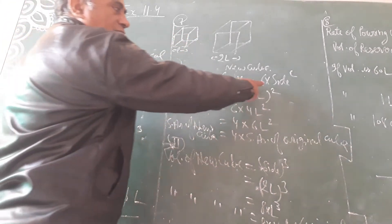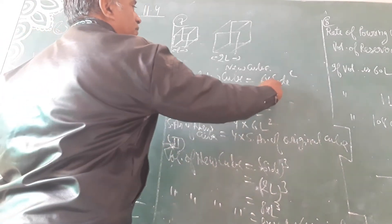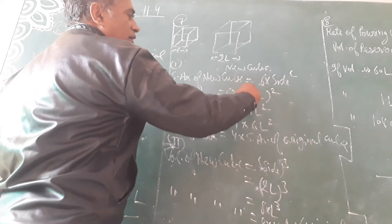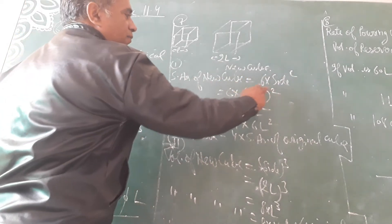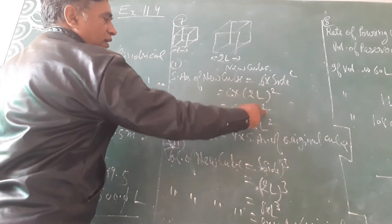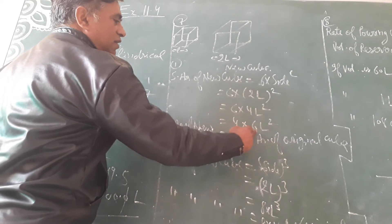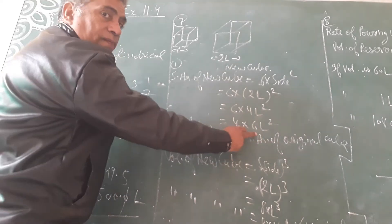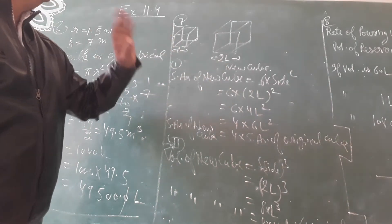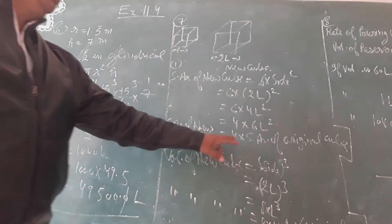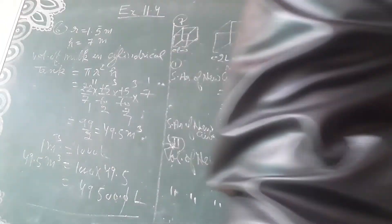How many times will the surface area of the new cube be? The surface area of the new cube is 6 into side squared, giving 6L squared. The surface area of the original cube is also 6L squared, so the new surface area is 4 times the surface area of the original cube.